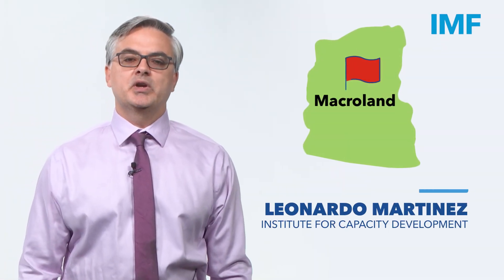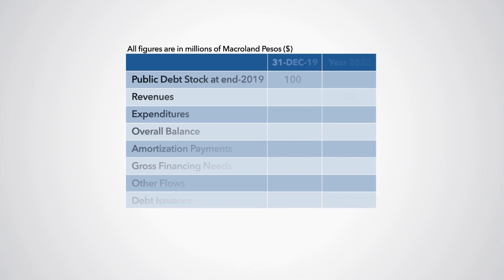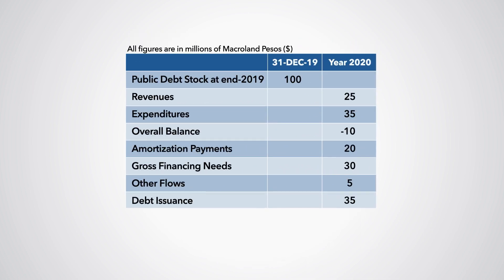We are asked to project the 2020 debt level of the hypothetical country Macroland. In this table, the Ministry of Finance shares with us information for both net debt issuances and borrowing requirements. Note the following: at the end of 2019, the public debt stock was 100 million Macroland pesos.